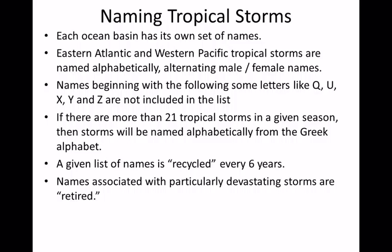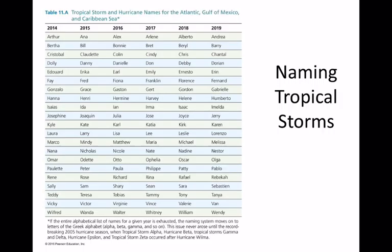If a hurricane was especially devastating, that name is retired and never used again — which is considered respectful. Looking at the six lists for the Gulf of Mexico, North Atlantic, and Caribbean, a student in the class spotted their own name in the list.